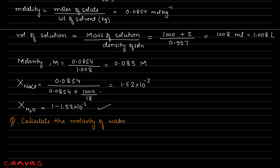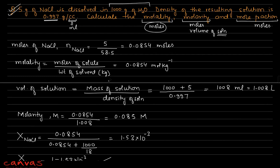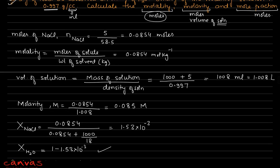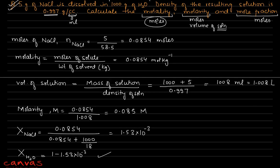So that solves the problem. The key strategy is: compare your given data with the unknown, figure out what additional quantity you need to calculate, start from the easiest step, and always pay attention to units.